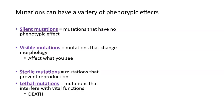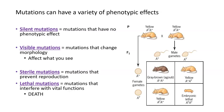Some mutations are more harmful than just causing a change to the phenotype or morphology of the organism. Some mutations are actually able to prevent an organism from reproducing — these are called sterile mutations. And some mutations are lethal: these changes to the DNA interfere with vital functions that the organism needs to survive, and so lethal mutations often end in death.